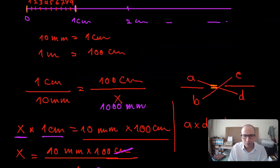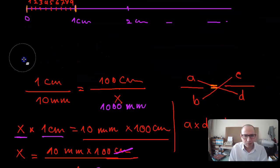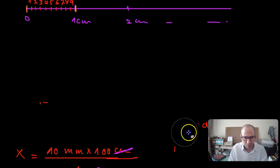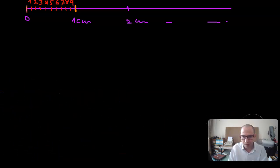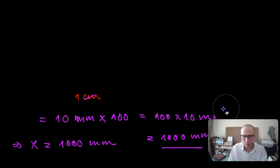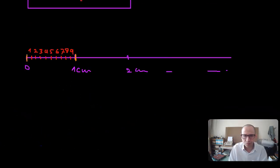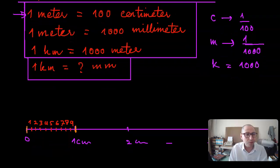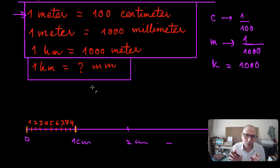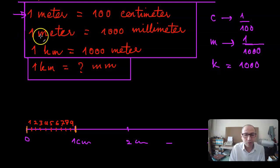Continuing with the same discussion as before, this second part is about how to make use of different things you know in mathematics to come up with your own logic and your own answers. The second thing taken from the text is: one meter is the same thing as a thousand millimeters. Why is that true?